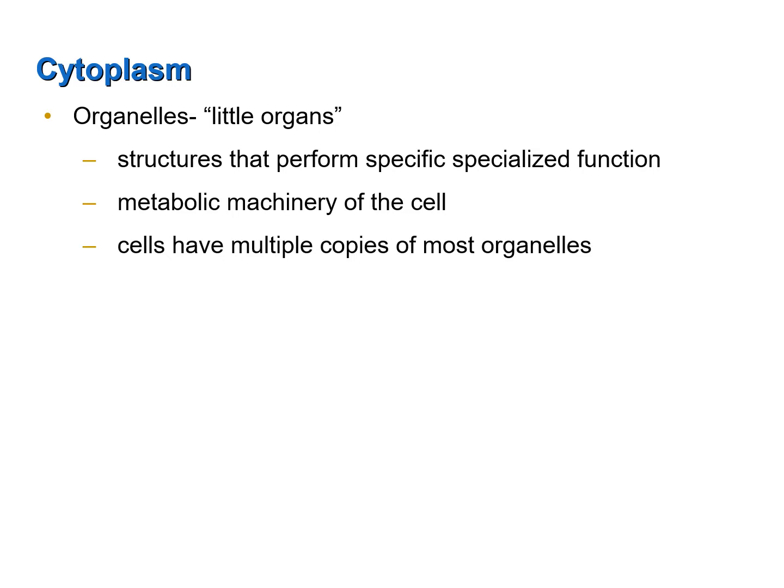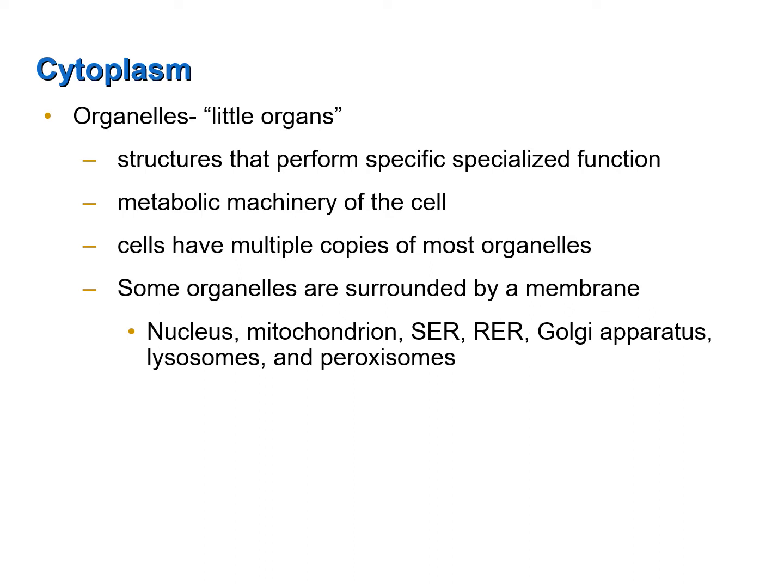Most cells have multiple copies of most organelles. Some organelles are surrounded by a membrane very similar in properties and structure to the plasma membrane. These membrane-bound organelles include the nucleus, the mitochondrion, the smooth and rough endoplasmic reticula, the Golgi apparatus, the lysosomes, and the peroxisomes.